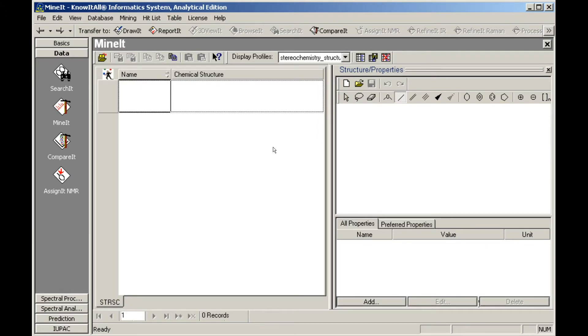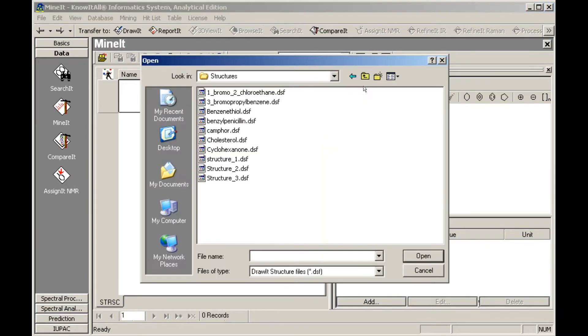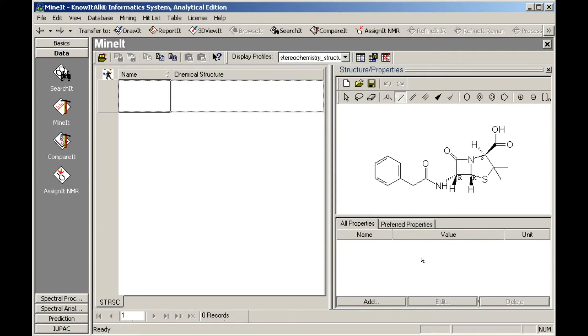We will open an existing structure file. The structure is displayed in the Structure Properties pane. Stereochemical descriptors are shown because Stereochemistry is enabled on the View menu.